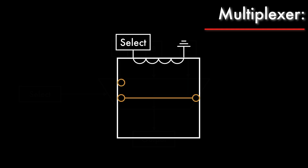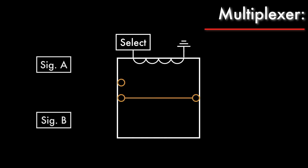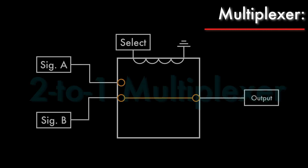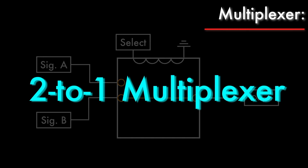A relay can form a basic multiplexer. By connecting an input signal to each of the normally open and normally closed poles, and turning the relay on or off, we can choose which input signal appears on the armature terminal. This is an example of a 2-to-1 multiplexer, since it uses one selection bit to choose from among two signals.